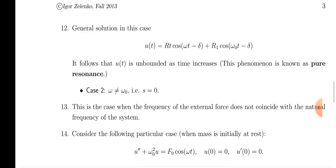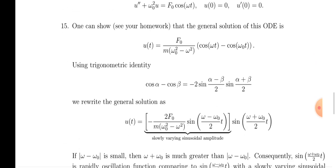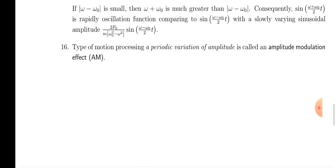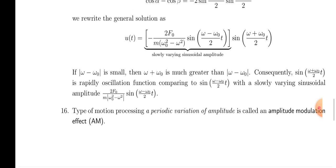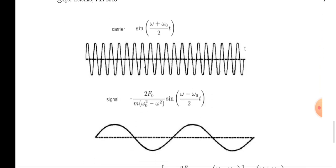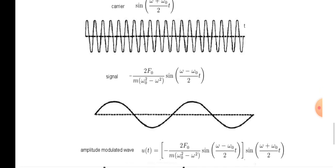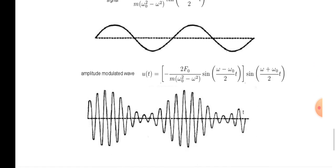For case two where ω is not equal to ω₀ and s = 0, the solution is u(t) = [−2F₀ / (m(ω₀² − ω²))] · sin[(ω − ω₀)/2 · t] · sin[(ω + ω₀)/2 · t]. This is a slowly varying sinusoidal amplitude. The periodic variation of the amplitude is called amplitude modulation — the AM effect. The uniform carrier signal is sin[(ω + ω₀)/2 · t], and the envelope is [−2F₀ / (m(ω₀² − ω²))] · sin[(ω − ω₀)/2 · t].